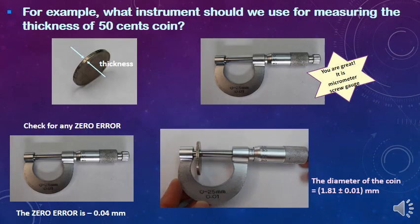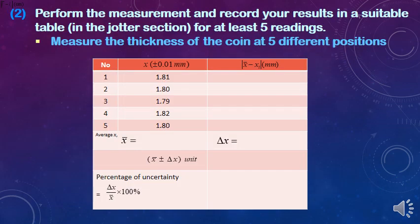Thus, the diameter of the coin is recorded as 1.81 ± 0.01 mm, where 0.01 mm is the sensitivity or uncertainty of the micrometer screw gauge. Measure the thickness of the coin at 5 different positions for at least 5 readings. The sensitivity of the measuring instrument is recorded as ± 0.01 mm in the column header. Since the sensitivity consists of 2 decimal places, all 5 readings recorded must also consist of 2 decimal places.